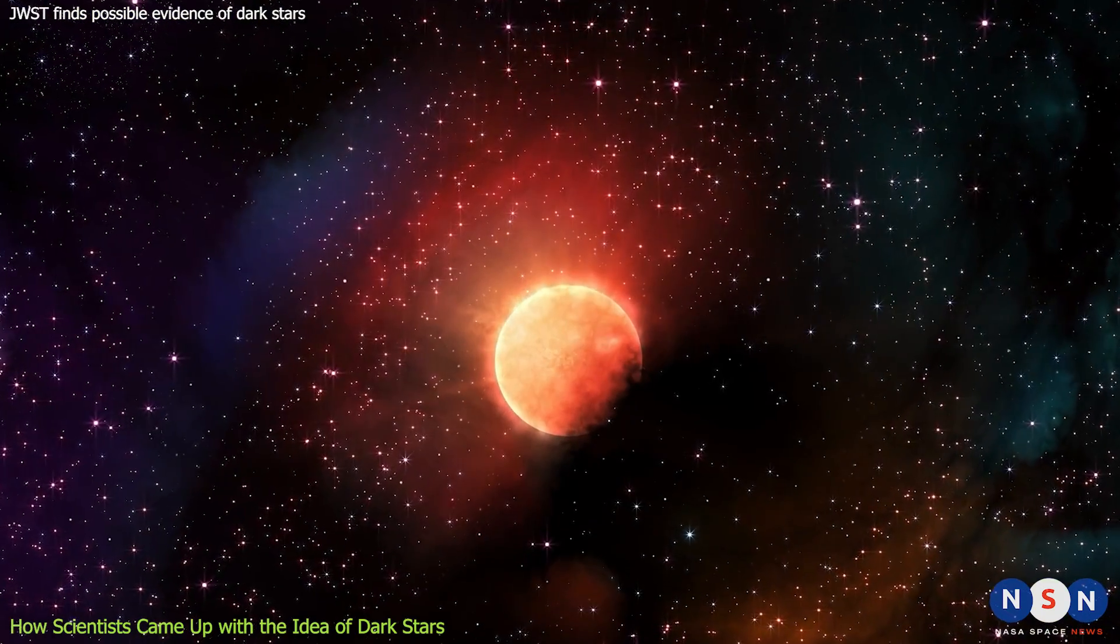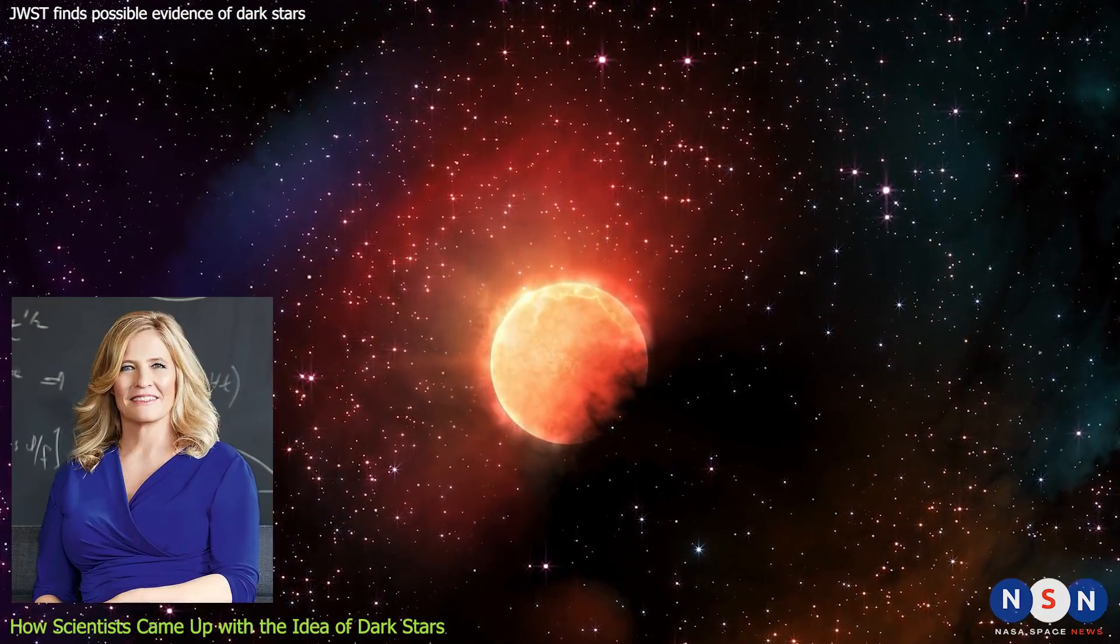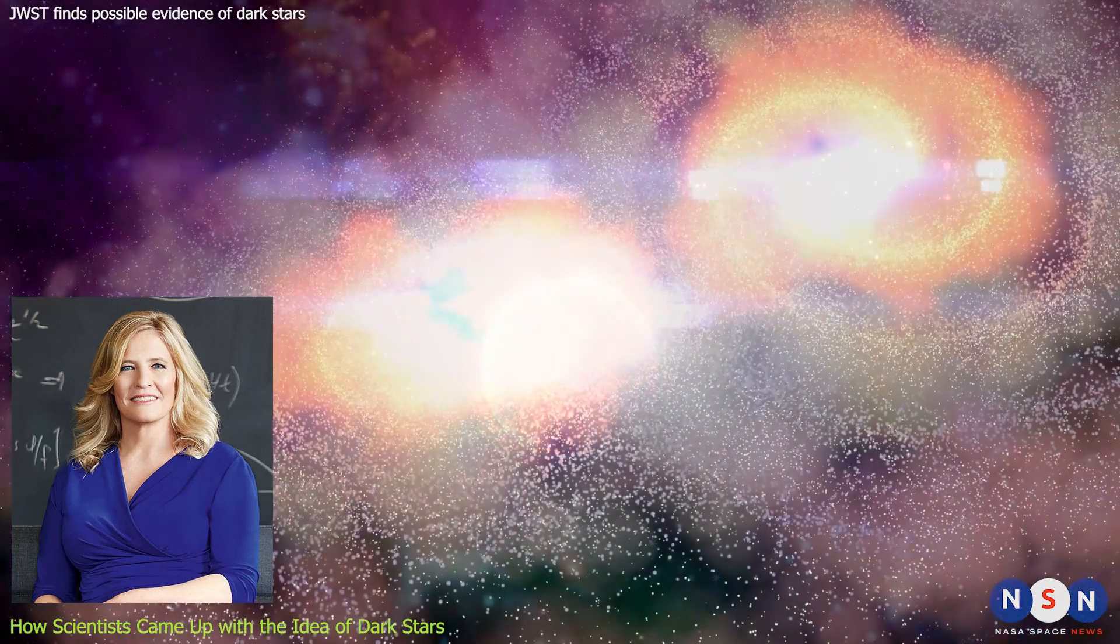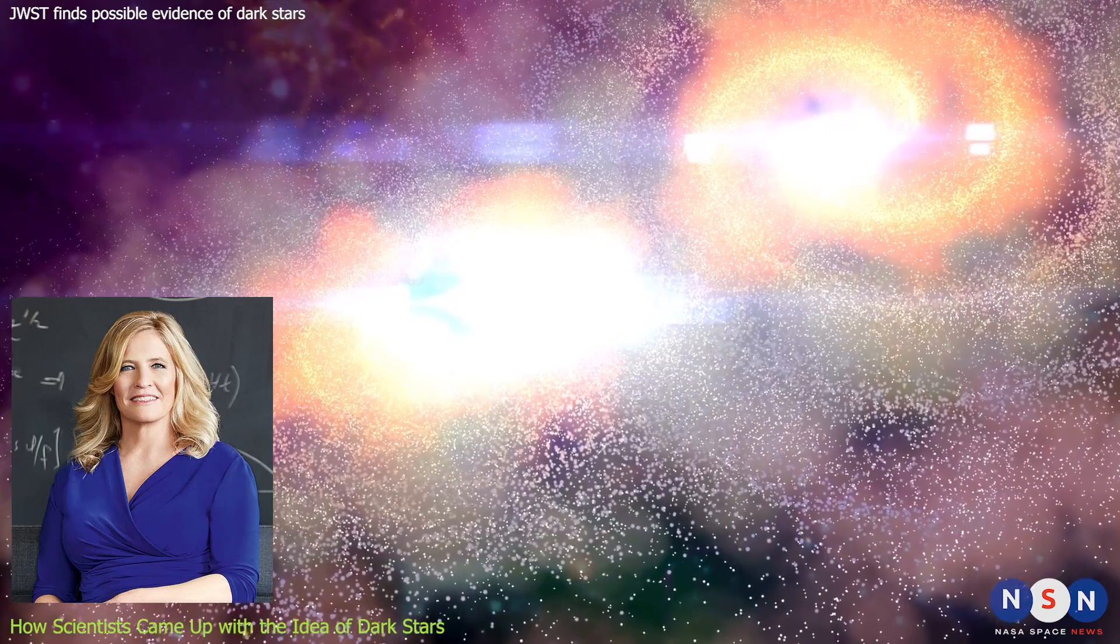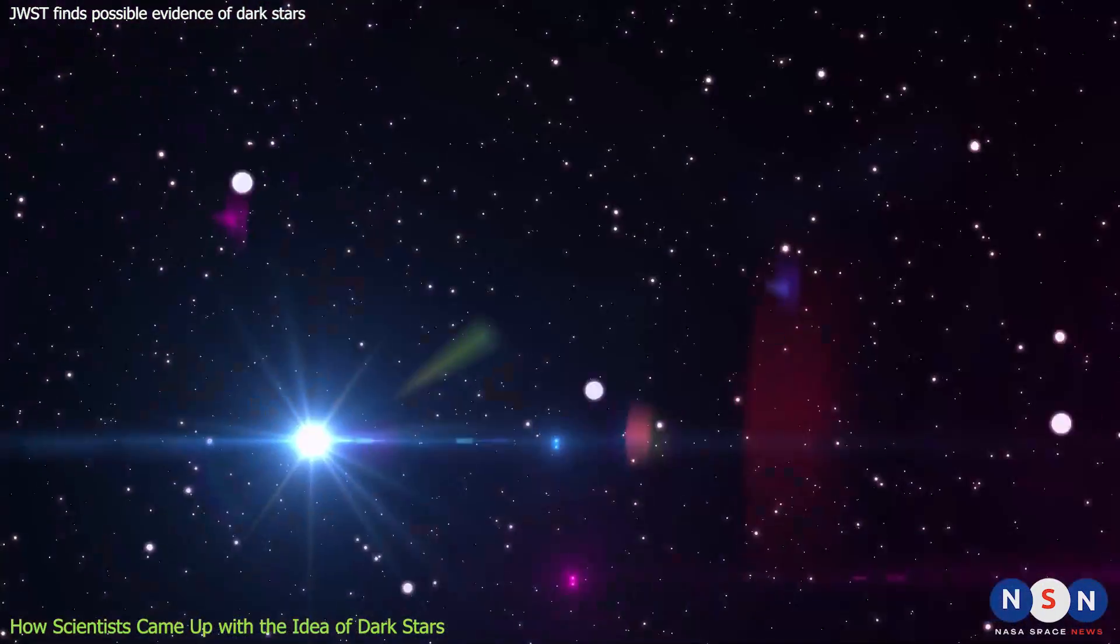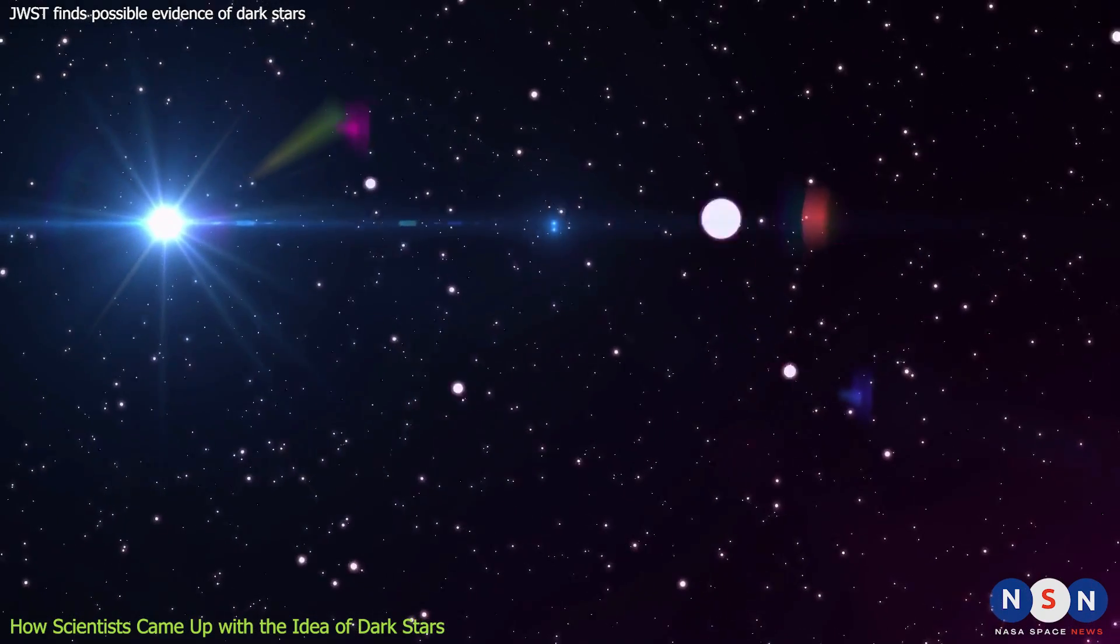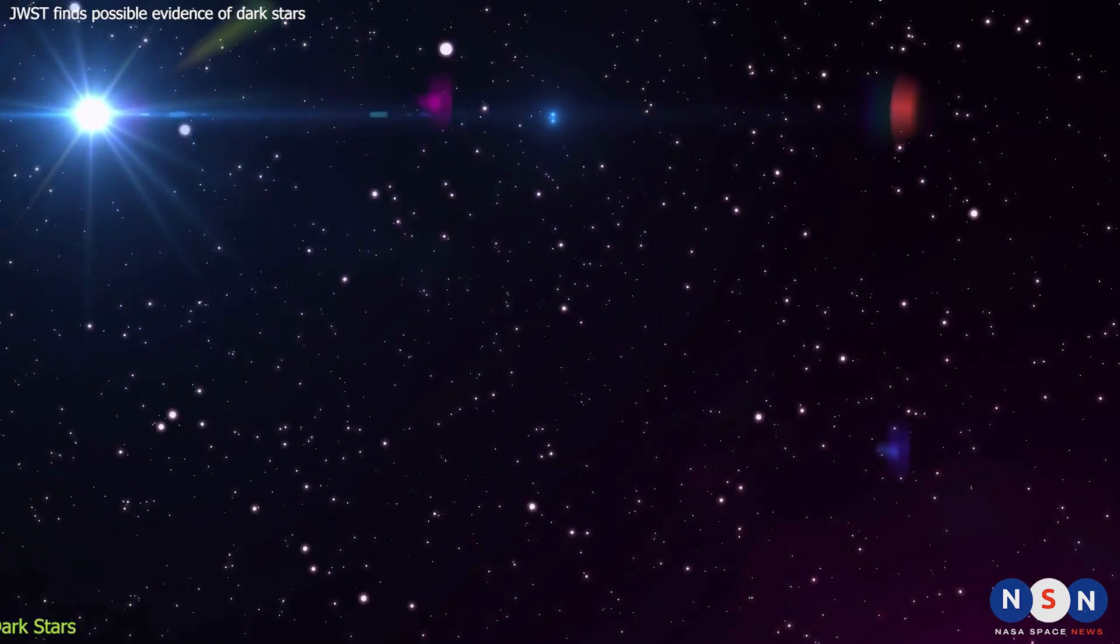But where could we find these dark stars? Fries predicted that they would form in regions where dark matter was highly concentrated, such as in the centers of galaxies or in globular clusters. However, finding them would not be easy, since they would be very faint and distant from us. We would need a very powerful telescope to detect them.